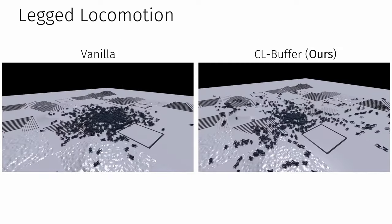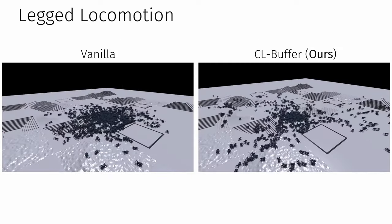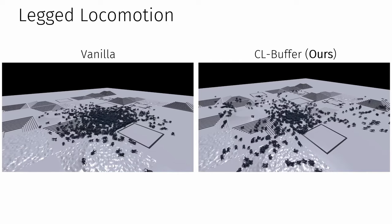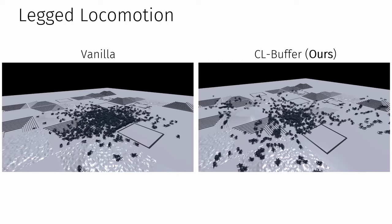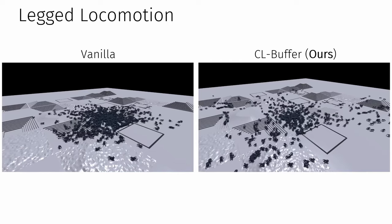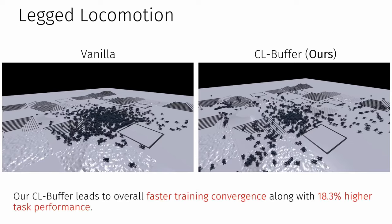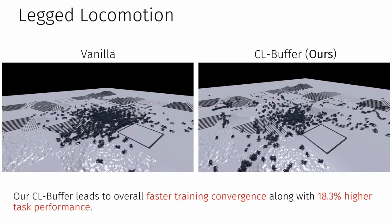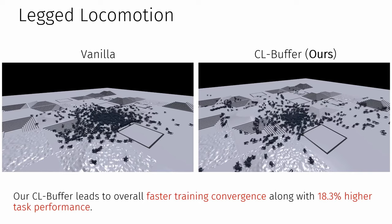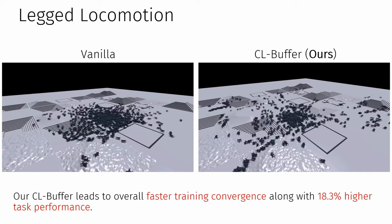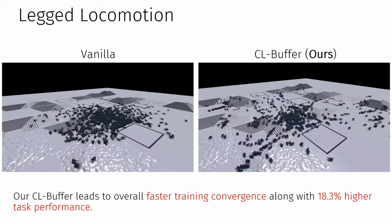We validate our approach on the task of legged locomotion with a quadruped robot traversing through challenging terrain without relying on any prior information about the environment. Compared to the nominal baseline without initial state buffer, our CL buffer leads to overall faster training convergence along with 18.3% higher task performance.